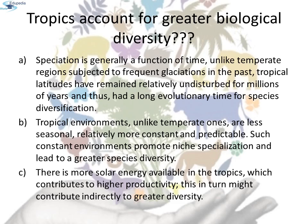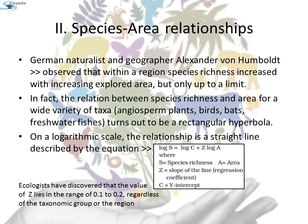What is so special about the tropics that might account for their greater biological diversity? Ecologists and evolutionary biologists have proposed various hypotheses. First, speciation is generally a function of time — unlike temperate regions subjected to frequent glaciation in the past, tropical latitudes have remained relatively undisturbed for millions of years, giving a long evolutionary time for species diversification. Second, tropical environments are less seasonal, relatively more constant and predictable, which promotes niche specialization and leads to greater species diversity. Third, there is more solar energy available in the tropics, which contributes to higher productivity and, in turn, might contribute indirectly to greater diversity.